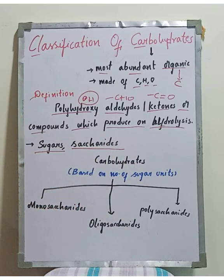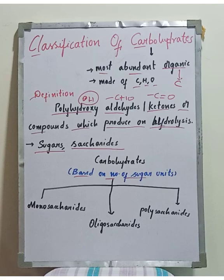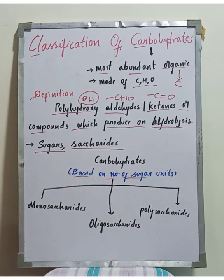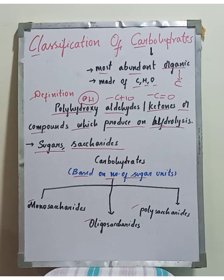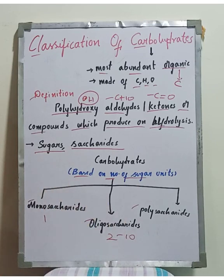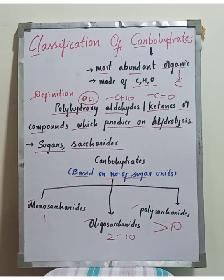The main classification of carbohydrates is based on the number of sugar units. Carbohydrates can be classified as: monosaccharides, which contain only a single sugar unit; oligosaccharides, which contain 2 to 10 sugar units; and polysaccharides, which contain more than 10 sugar units.